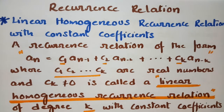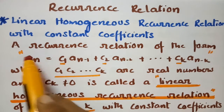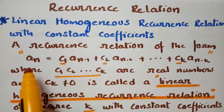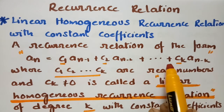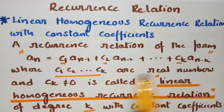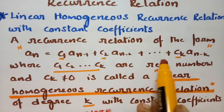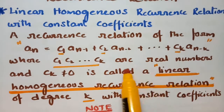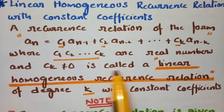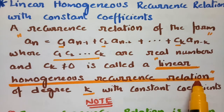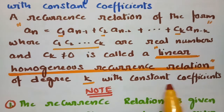Today's video is on linear homogeneous recurrence relations with constant coefficients, related to discrete mathematics. According to the definition, a recurrence relation of the form aₙ = c₁aₙ₋₁ + c₂aₙ₋₂ + ... + cₖaₙ₋ₖ, where c₁, c₂, ..., cₖ are real numbers and cₖ ≠ 0, is called a linear homogeneous recurrence relation of degree k with constant coefficients.